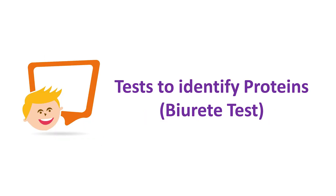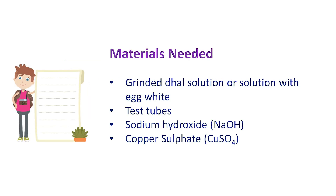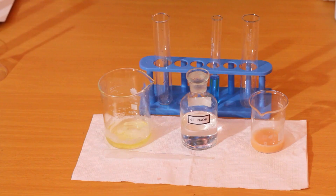Our next practical is to identify proteins. We are going to do the biuret test. The biuret test can be done with a grinded dahl solution or a solution with egg white. We need test tubes, sodium hydroxide, and copper sulfate. Let's see how this practical is done.